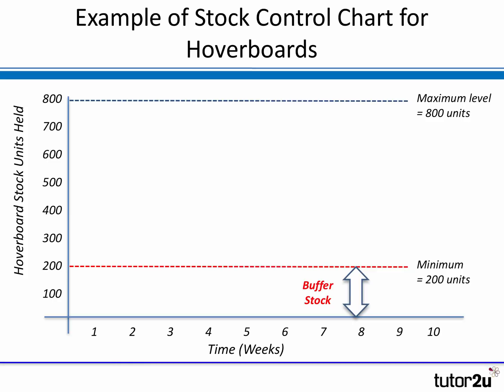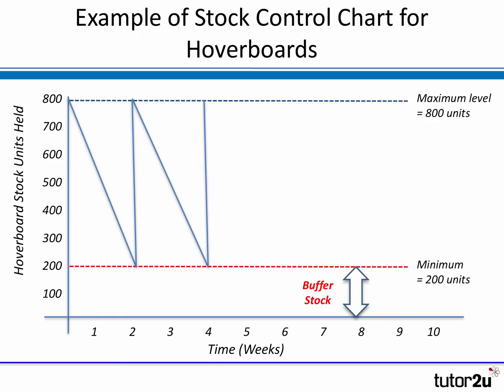We know from our sales that demand for hoverboards is quite predictable — we sell about 300 a week. If we start with 800, we know that we'll be down to 200 within two weeks. We then add stock back up to 800, demand brings it down again over two weeks, we add more stock back up to maximum, and demand comes in again. You can see how this stock control process works — we always replenish back up to our maximum level, knowing that ideally we don't want stock to fall below 200 hoverboards.